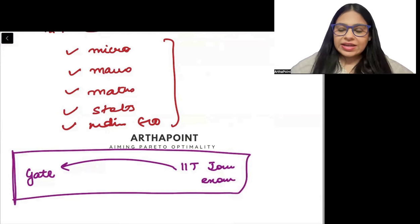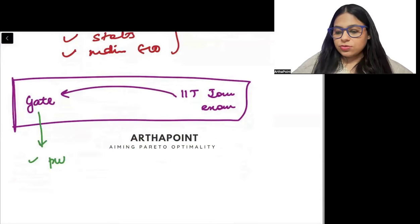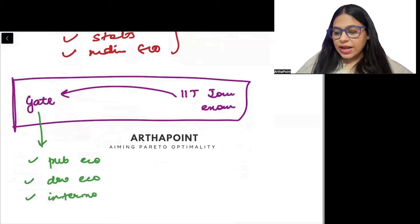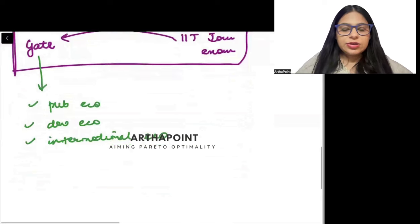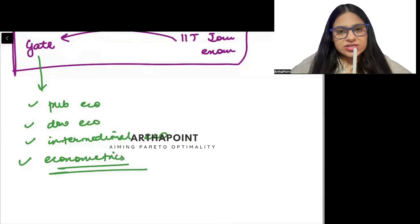You had to study these extra subjects like public economics, development economics, international economics. And last year GATE ka agar paper dekhoge, you will understand the level of econometrics. It has been a very very difficult level of econometrics - spurious regressions, simultaneous regression equations, time series modeling, cross sectional - everything is coming in GATE econometrics. Nothing is left.